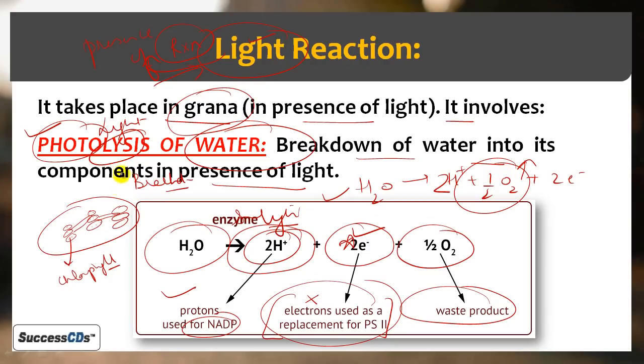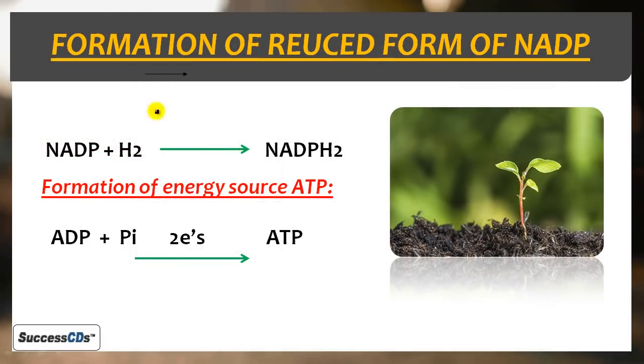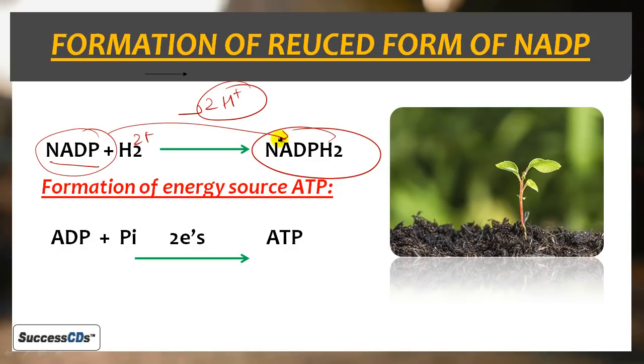After that, the hydrogen ions released combine with NADP, an energy source present in plant, and it gets reduced into NADPH2. So our second step is formation of reduced form of NADP - NADPH2.